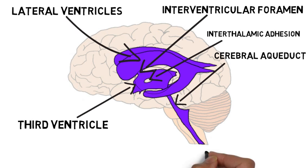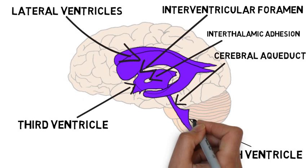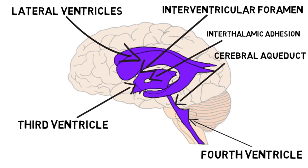The third ventricle communicates with the fourth ventricle via the cerebral aqueduct. The fourth ventricle is wedged between the cerebellum on one side and the brain stem on the other. The fourth ventricle is shaped like a tent whose peak protrudes into the cerebellum. There are three openings in the fourth ventricle that allow cerebrospinal fluid to enter the subarachnoid space, a CSF-containing cavity that surrounds the brain. Thus, CSF leaves the ventricular system via the fourth ventricle.